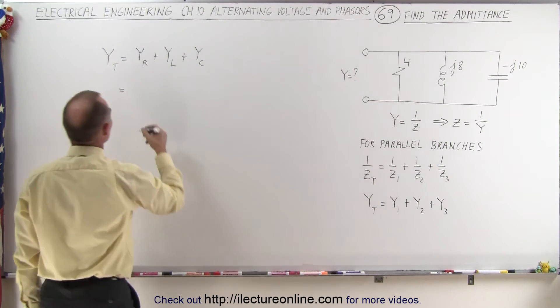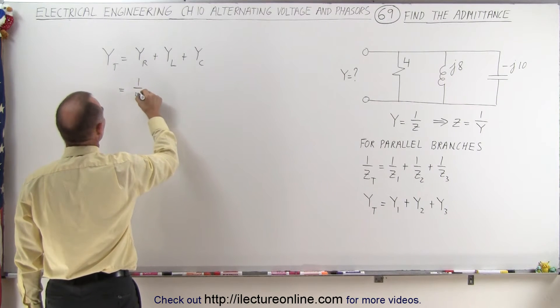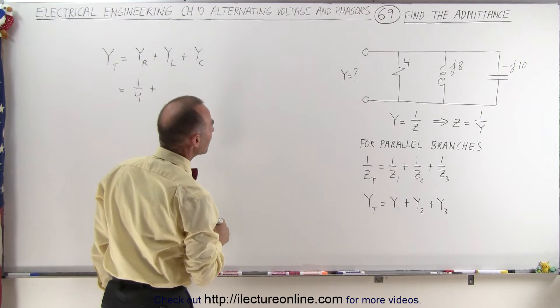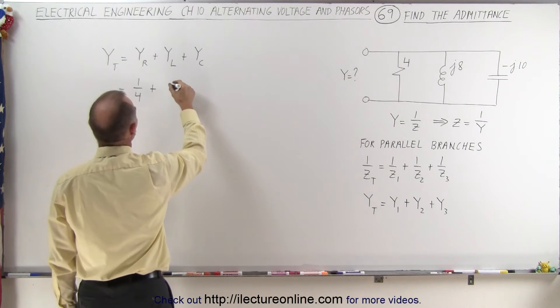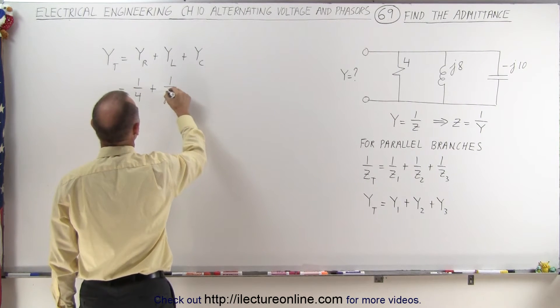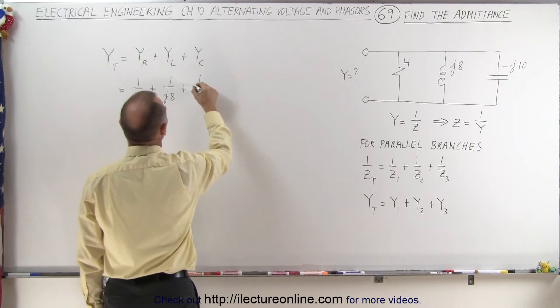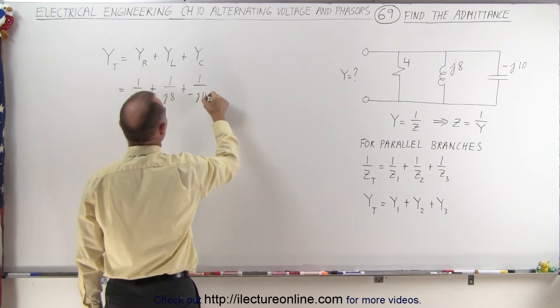in the case of the resistor, that's going to be 1 over 4 plus, in the case of the inductor, 1 over J8 and in the case of the capacitor, that's going to be 1 over minus J10.